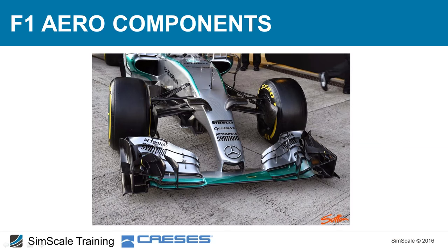Here we have the end plate, whose role is to seal the wing from the sides so that pressure generated on top of the wing doesn't escape laterally, generating more downforce. The cascade element — comprising a turning vane and a flap — channels air to the outside of the tire and upward to smooth the flow in that region. The R vane also turns air outboard and helps the cascade element work more effectively.